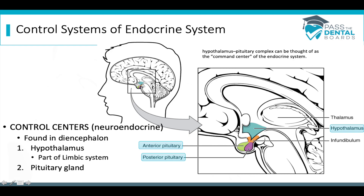As far as what controls the endocrine system, two main organs in the brain — the hypothalamus and the pituitary gland, which can be divided into an anterior and a posterior part. This is sometimes called the hypothalamus-pituitary complex, and that is the command center of the endocrine system. So if we want to control the largest gland in the endocrine system, which is the thyroid, we're going to involve the hypothalamus-pituitary complex.